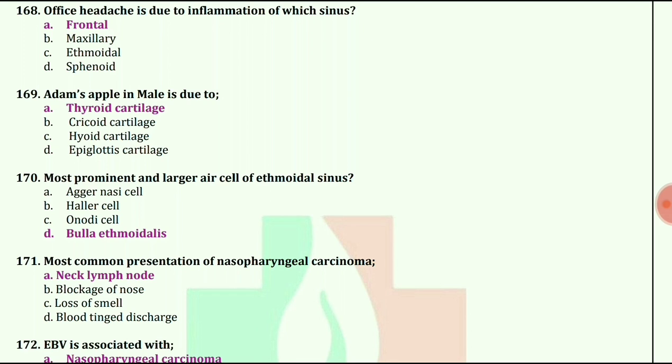Most prominent and larger air cell of ethmoidal sinus is bulla ethmoidalis.